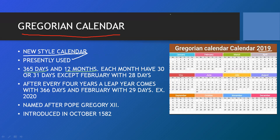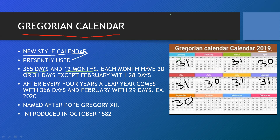Each month has 30 or 31 days. January has 31 days, March has 31 days, April has 30 days, May has 31 days, June has 30 days, July has 31 days, August has 31 days, September has 30 days, October has 31 days, December has 31 days. But in the month of February we have 28 days. If you add all these you get 365 days.